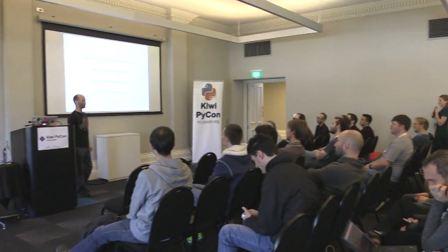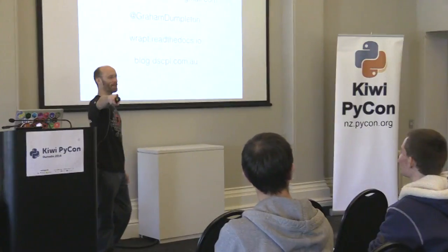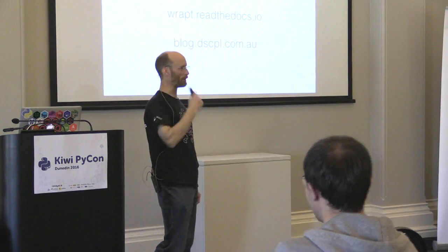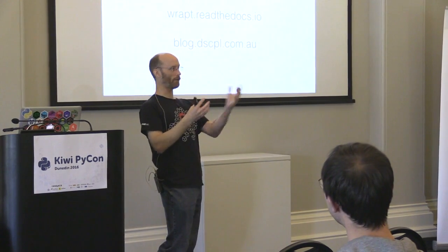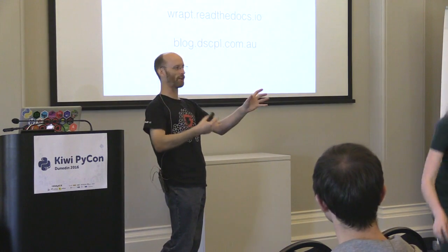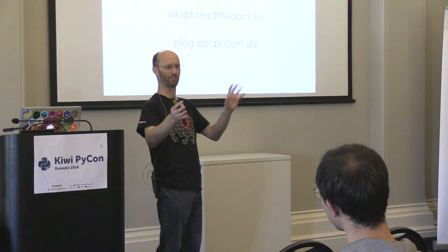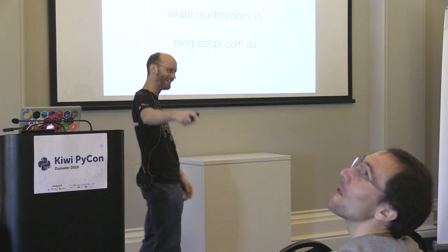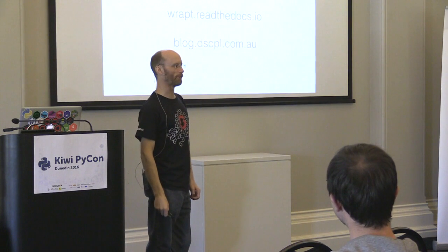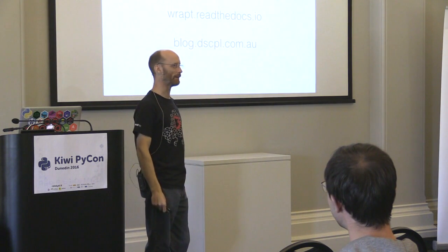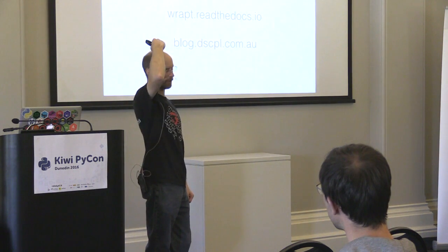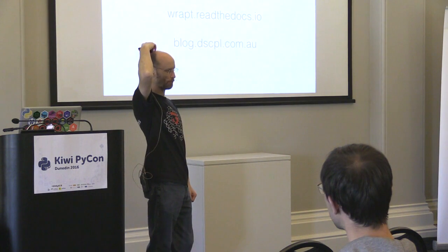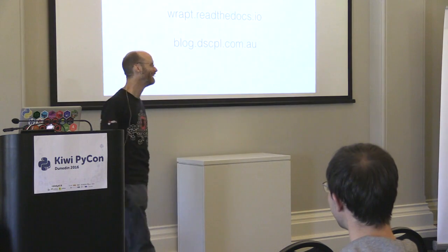Decorators are used in lots of different places. Django has this problem where they have a decorator that works on a normal function but then you have to create a second version using another function wrapper to turn it into an instance method. Even in the Python standard library, things like lru_cache mess things up in the same way. If we ever get Wrapped into the standard library, I'm looking at whether they'd let me change those other things inside the standard library to use it.